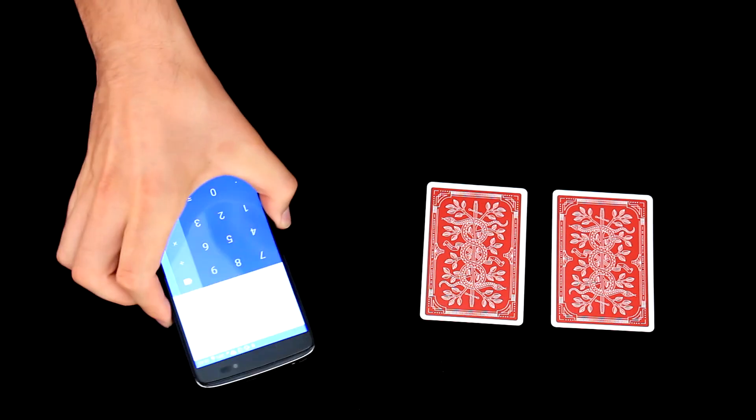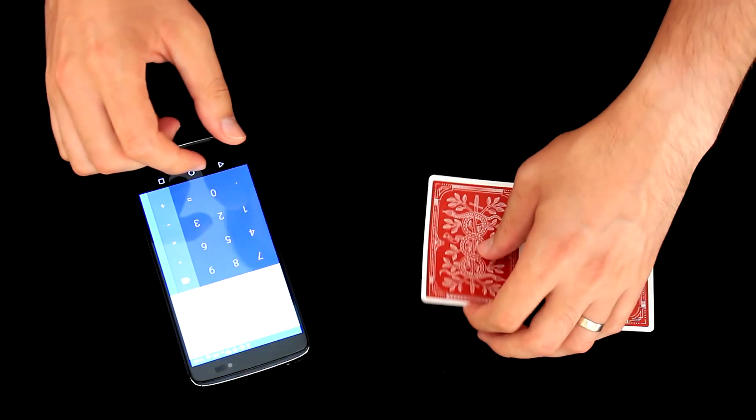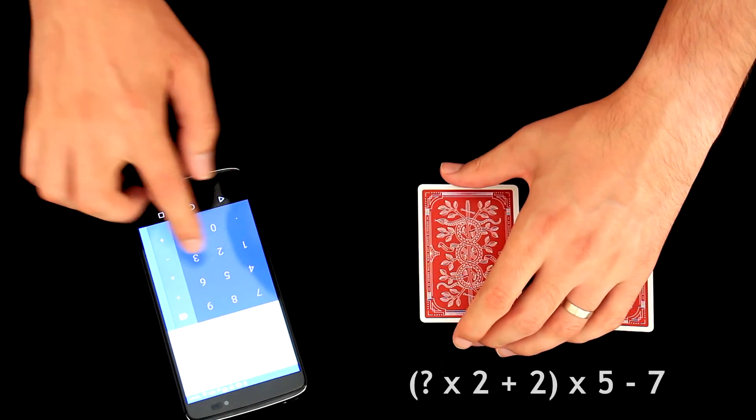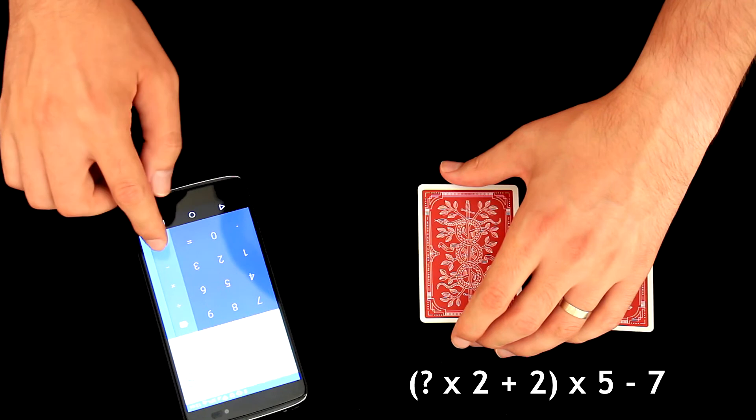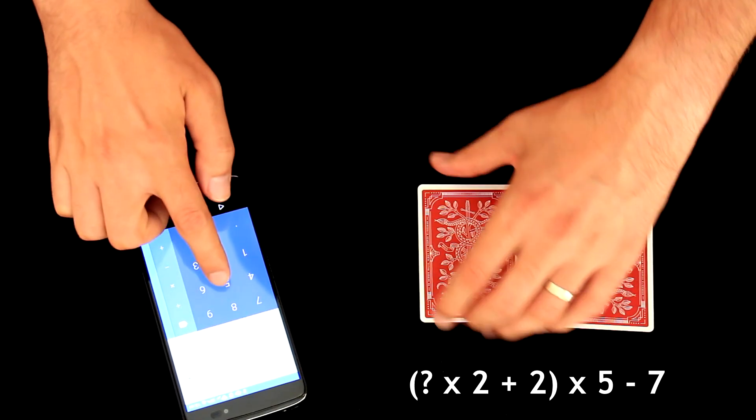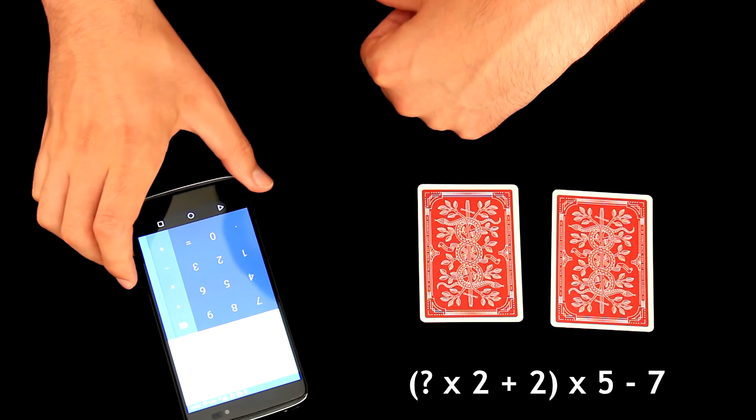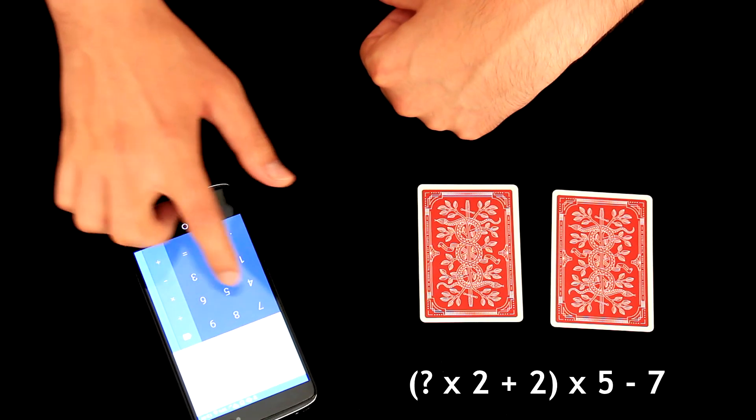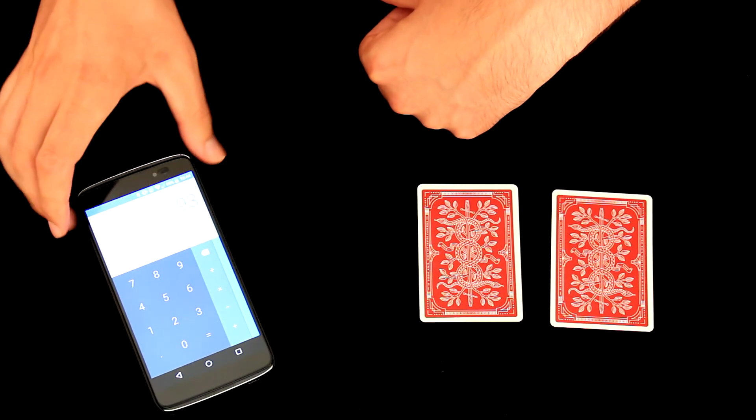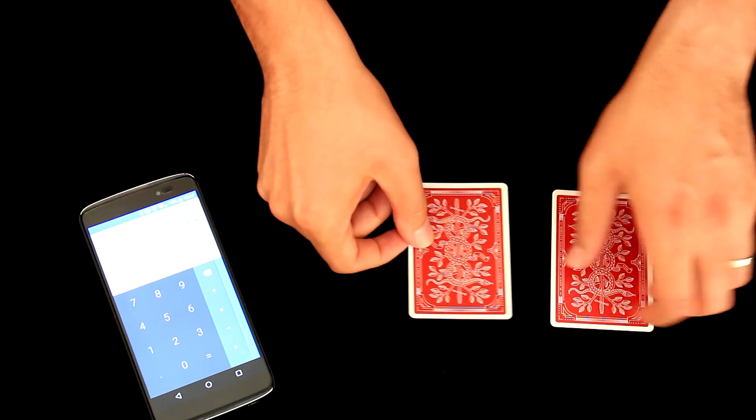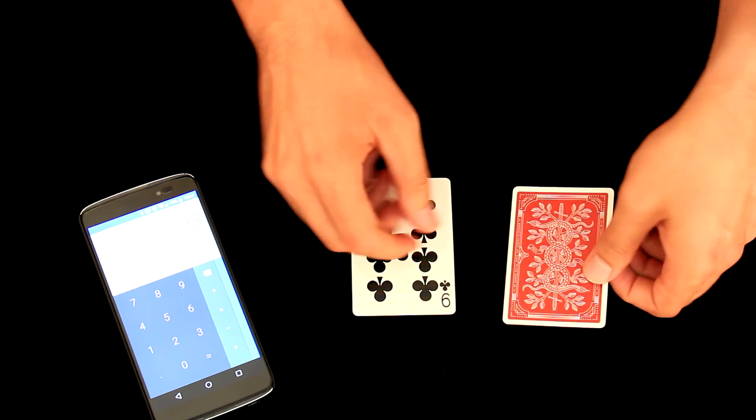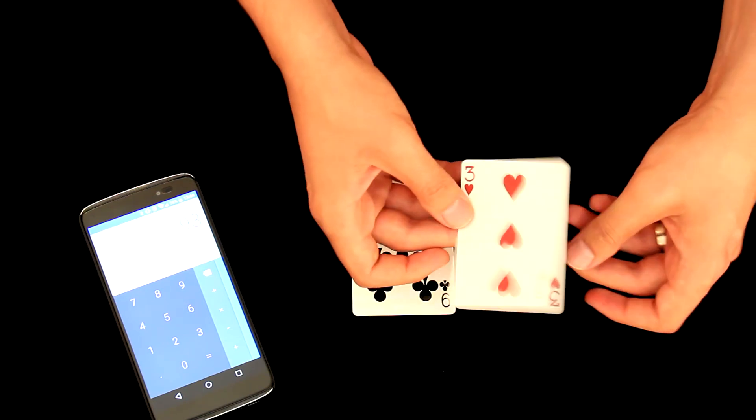So you will ask the spectator to take his number, in this case it is number 9 and then multiply by 2, which is 18. And then he will add 2 and then multiply by 5 and then from result he will subtract number 7 and the result is now 93, which is again a match to our cards we have on a table. So spectator's selection was 9 and my selection was number 3.